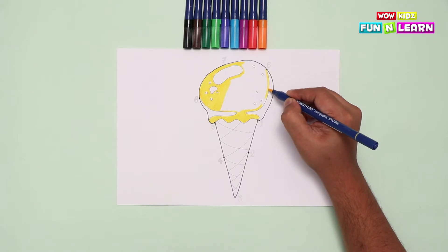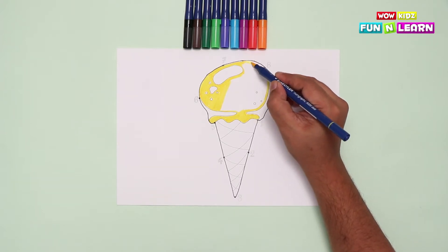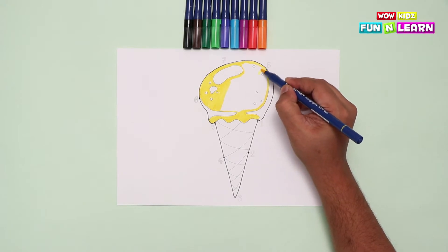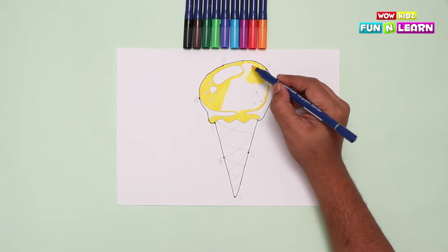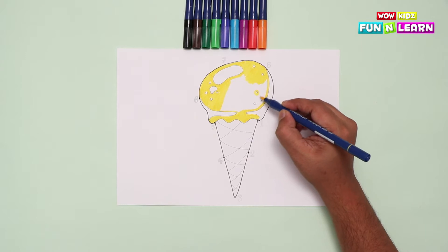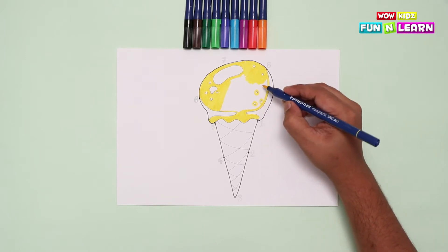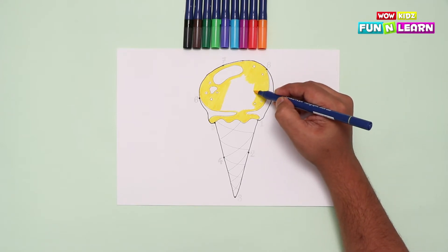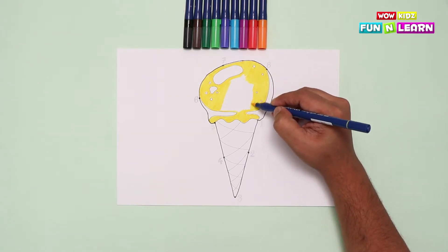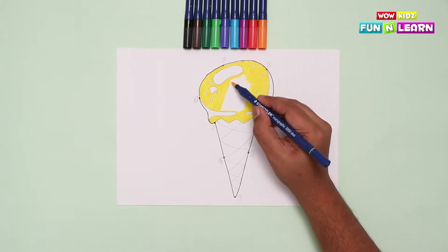And now the entire scoop! Let's color it all! Leave the circles. Color around them. Fill in the gaps and fill the rest of it.